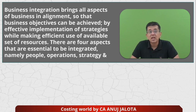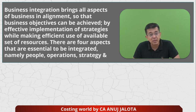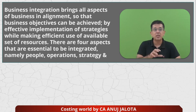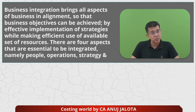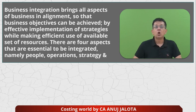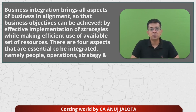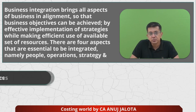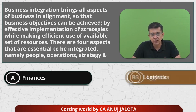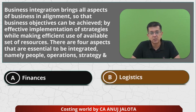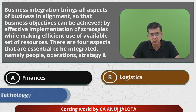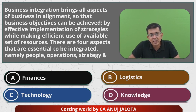There are four aspects that are essential to be integrated. Three of them are given — people, operations, and strategy — and the last one you have to find out. The options are: finances, logistics, technology, and knowledge.